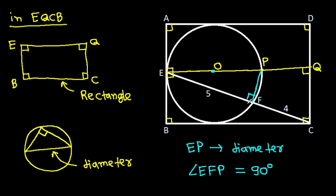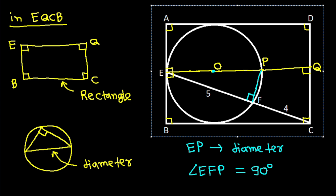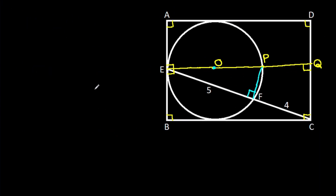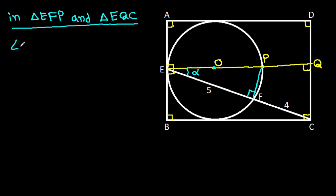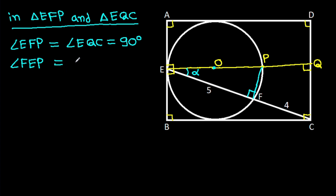This angle EFP will be 90 degrees. Now suppose this angle is alpha. Then in triangle EFP and triangle EQC: angle EFP equals angle EQC, that is 90 degrees. And angle FEP equals angle QEC, that is alpha.